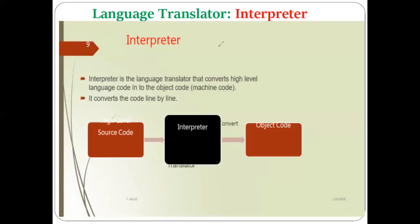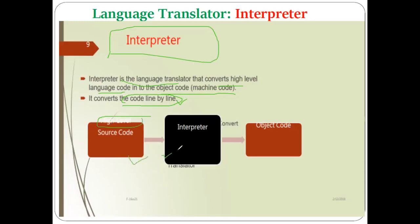The third type of language translator is the interpreter. The interpreter also converts higher-level language code into machine code, same as the compiler, but the key difference is that the interpreter converts the code line by line. In the case of the compiler, the whole higher-level language code is converted into machine code at a single time, whereas the interpreter converts into machine code line by line.